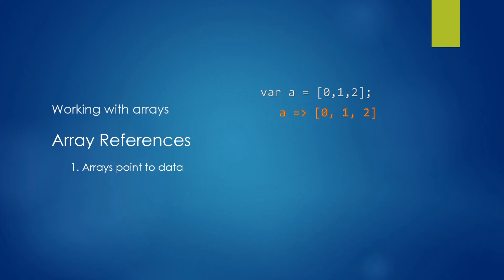By that, I mean that if you say var A equals the array 0, 1, 2, the value isn't actually stored in the array. Rather, A now points to the value instead. So rather than A being the value itself, it points to the value.